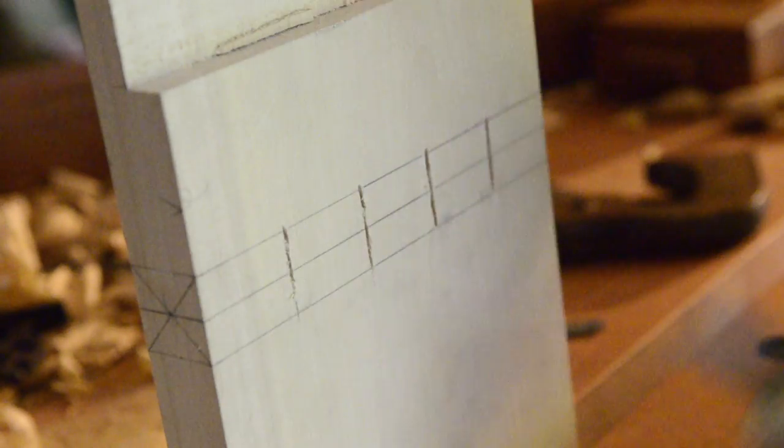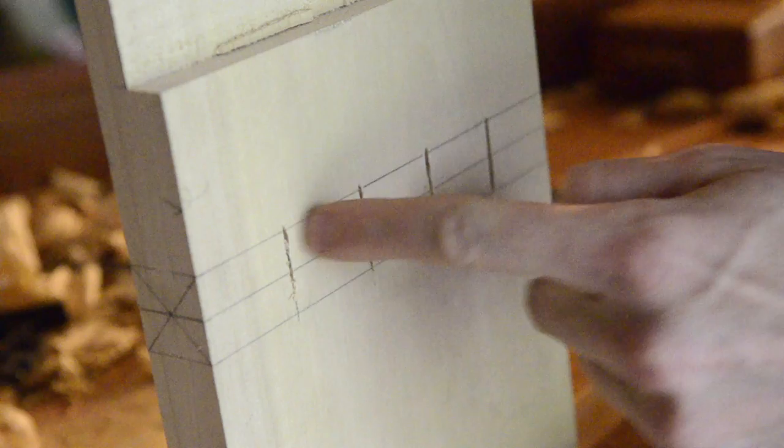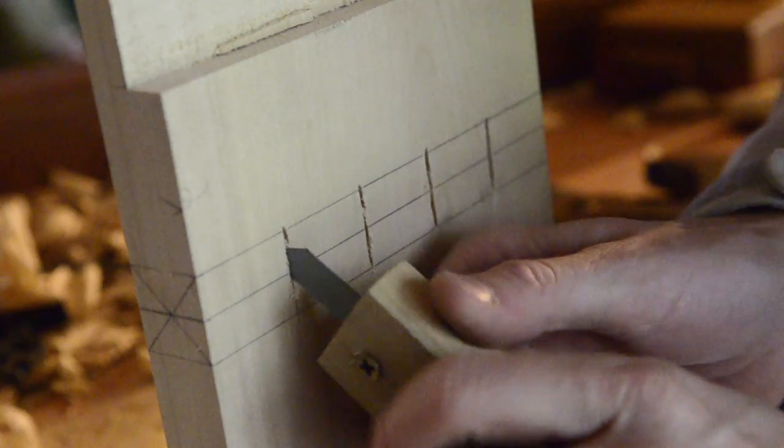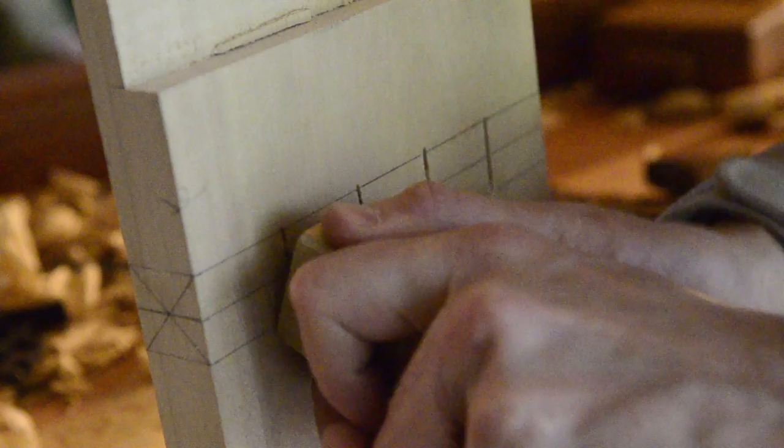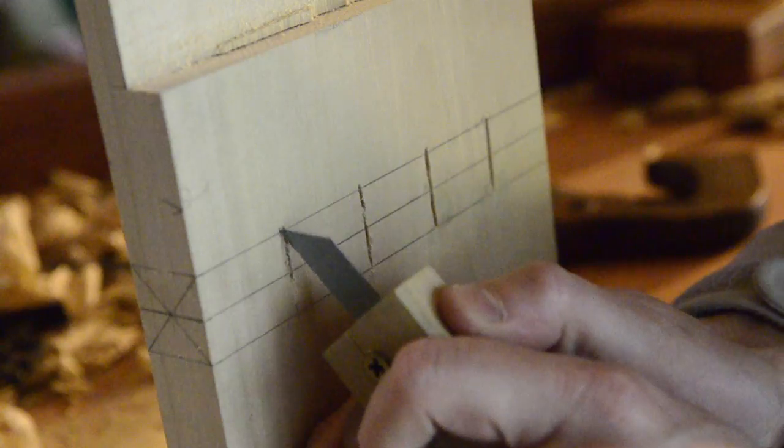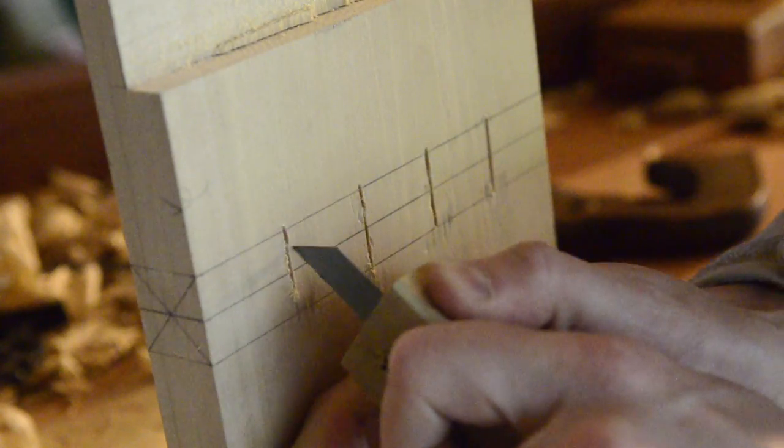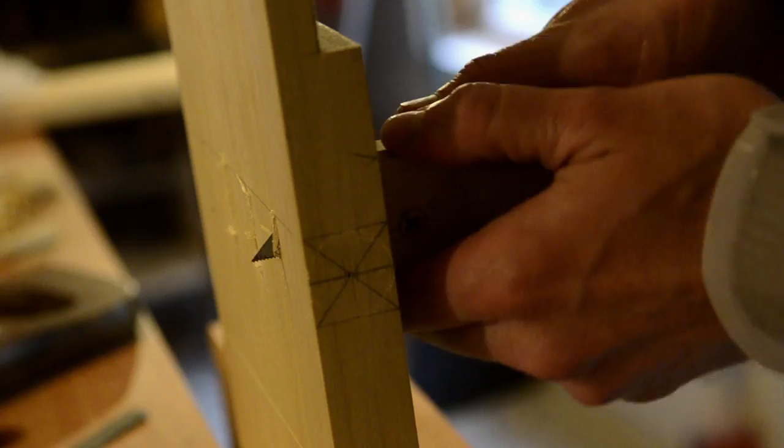You start off by drilling a little pilot hole here - I think I used a sixteenth inch bit. Then just put it in at the top and pull down, and keep going until it starts to exit through the other side. You can see that it's poking through the other side now.